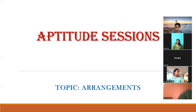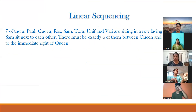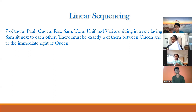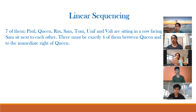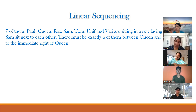Hello everyone, welcome back to our aptitude sessions. Today we'll be starting with a new topic called arrangements. An arrangement is the way of placing given objects in a particular order as mentioned in the question — similar to a puzzle test where the order is given in a tricky format or as a riddle. You take those indirect clues and deduce the direct clues from them. There are two kinds of arrangements: linear sequencing and circular arrangement.